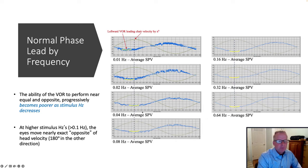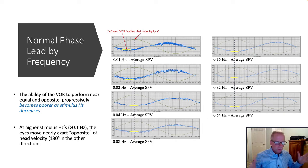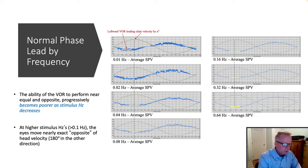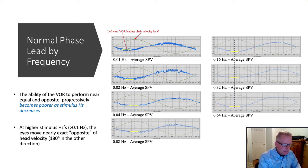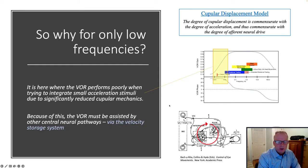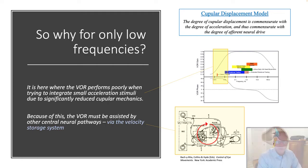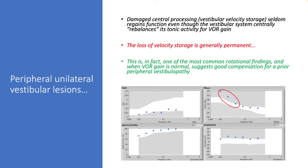But as our head approaches faster frequencies, we're much better timed between the ocular output — the VOR — and the head output. We generally only see this phase lead for lower frequencies, and it's predominantly generated through the velocity storage system, which we'll see again when we talk about velocity step testing.